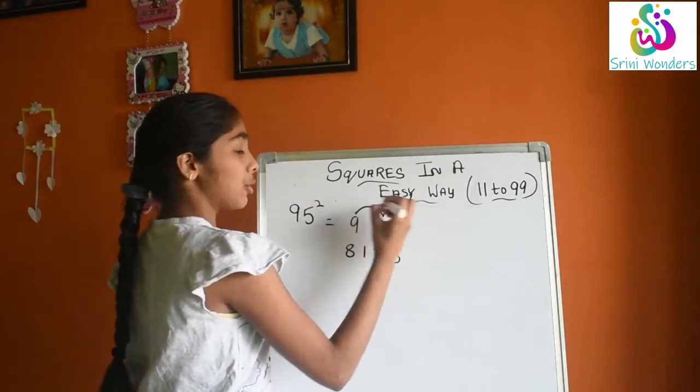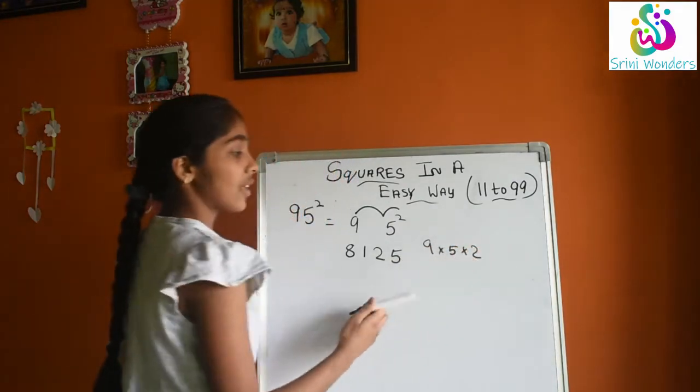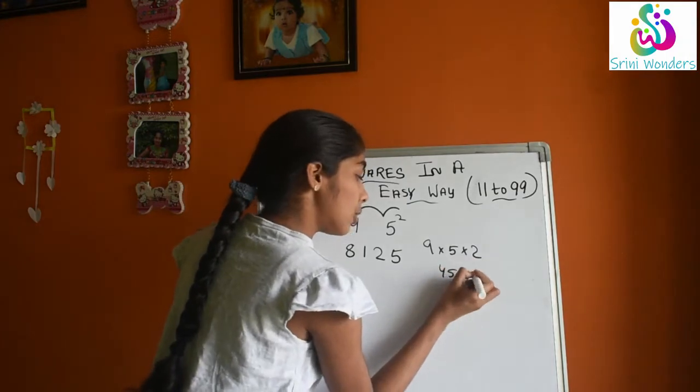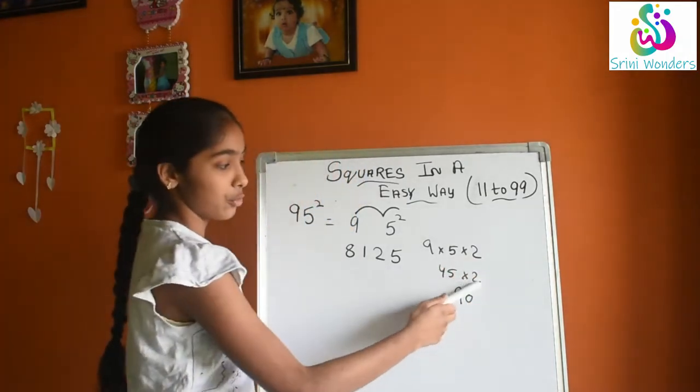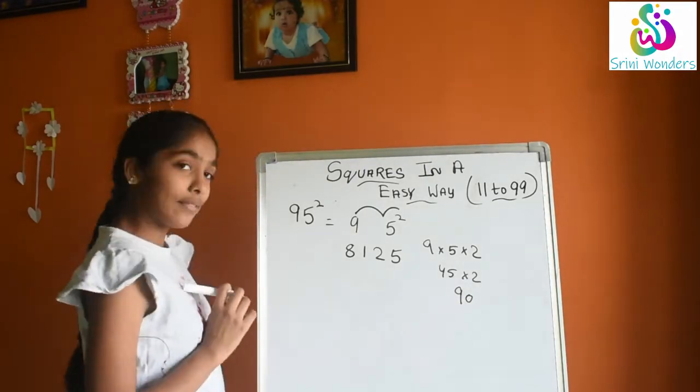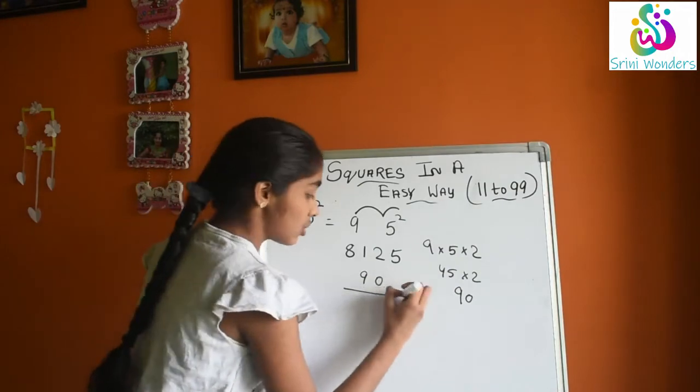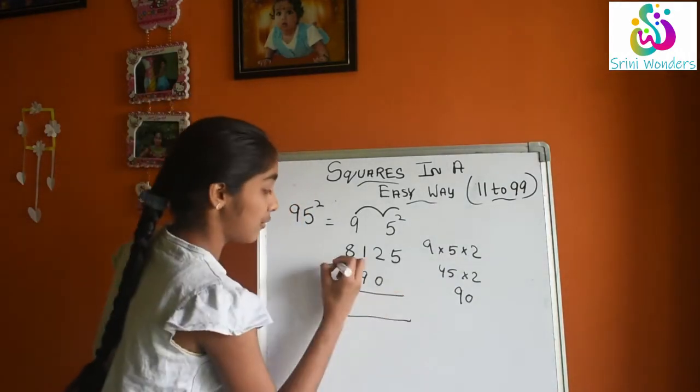Now what we will do? 9 into 5 into 2. 9 into 5 is 45 into 2 we will do, that is 90. The answer is 90. Now where we will write 90? Middle we will write 90. So now we will add.